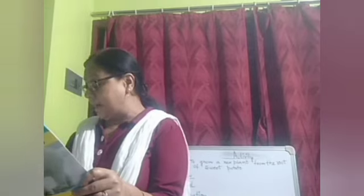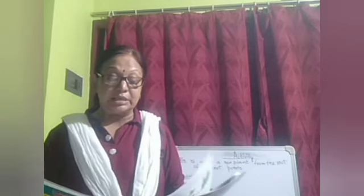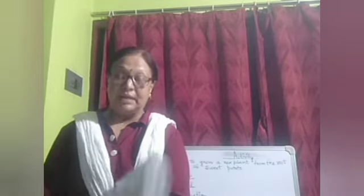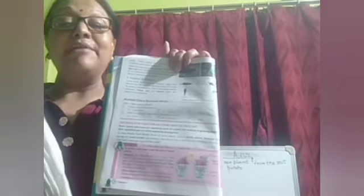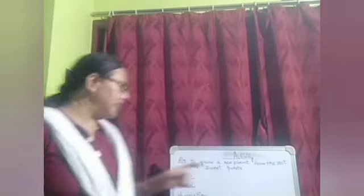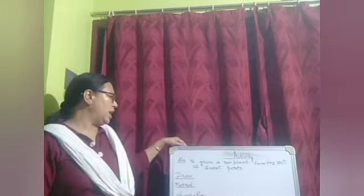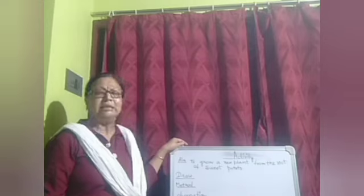That's all for the first exercise — page number 19, questions A, B, and C. Now there is one activity given on page number 16. I will upload it on the portal and you will do it as homework. I'm explaining it here first. You have to write the aim of the activity: to grow a new plant from the root of sweet potato.